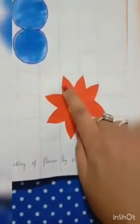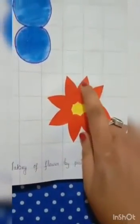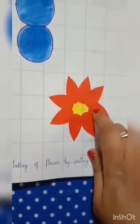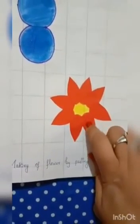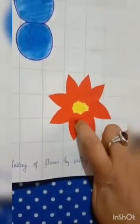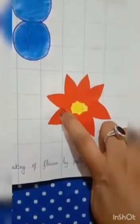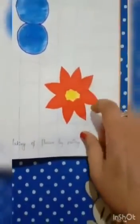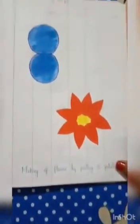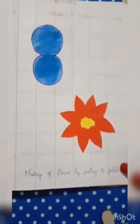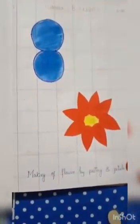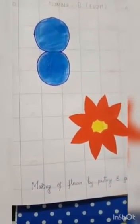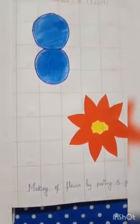See children, just have a look. In this way, you are going to form firstly number 8, then color in it. After that, we are going to make a flower by pasting 8 petals: 1, 2, 3, 4, 5, 6, 7, 8. Aise hum log 8 petals se we are going to make a flower. This will be your activity for today. Okay children?